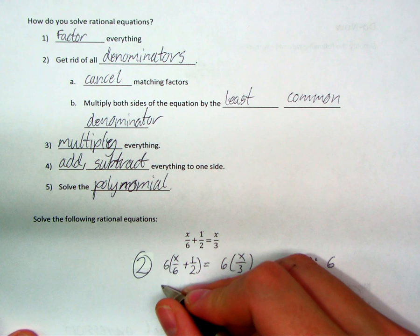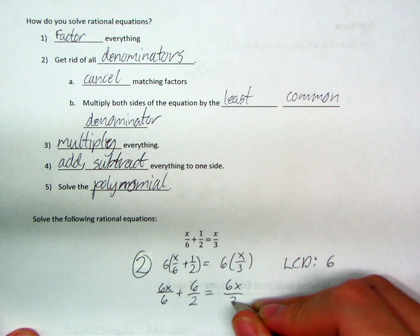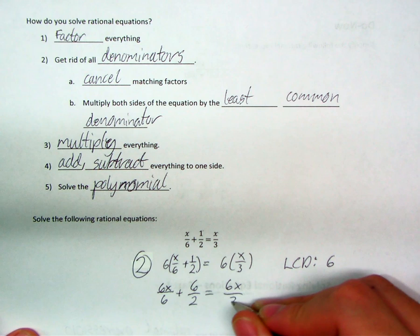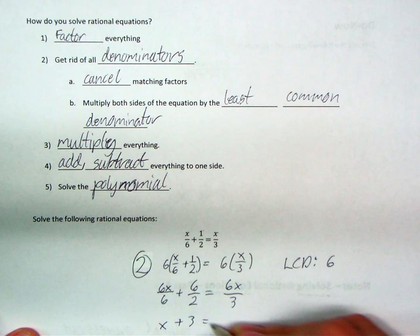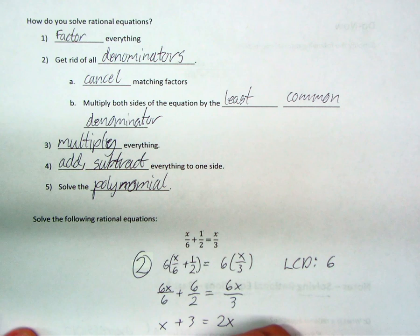I need to simplify that a little bit more so everything cancels. I've got 6x. That 6 is going to distribute to both of the fractions in here. It's equal to 6 times x over 3. And then I need to simplify this. So 6 over 6 cancels to 1. I've just got x plus 3 is equal to 2x.